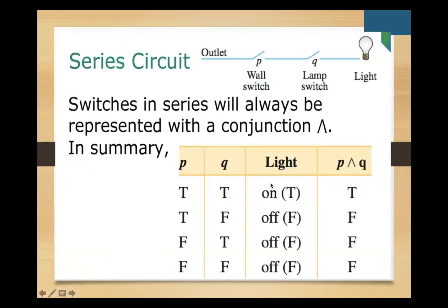We have the truth table for the series circuit. Switches in series are similar to the AND conjunction. If p is true and q is true, the light is on. Only if both the first switch p is true (closed) and the second switch q is true is the result true. All other combinations — if one is false or open — the light is off.